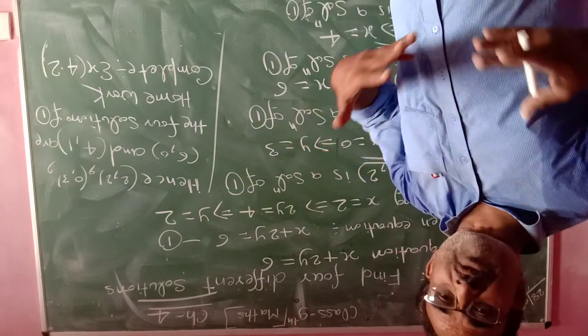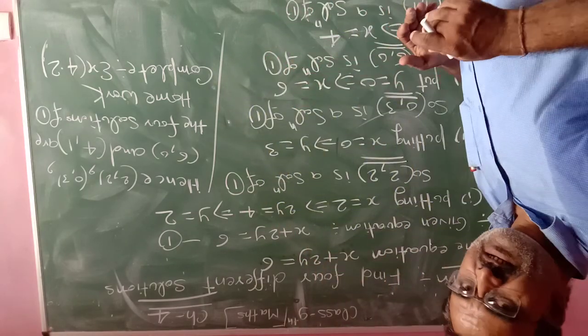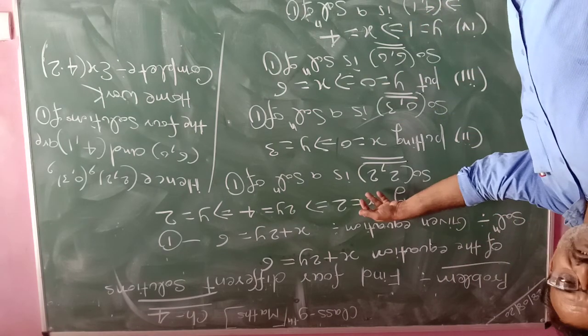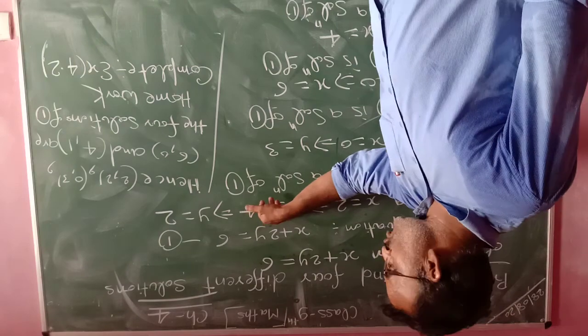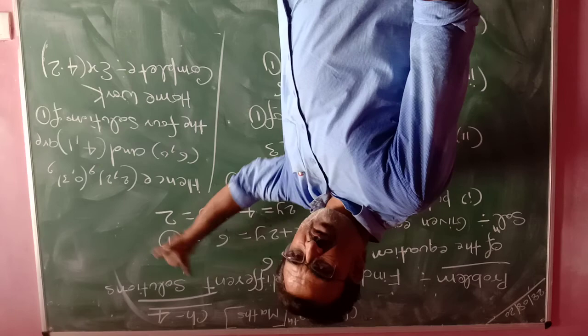In this way, you have to find four solutions. Please see, one by one. The given equation is x plus 2y equal to 6. Mark this as equation 1.